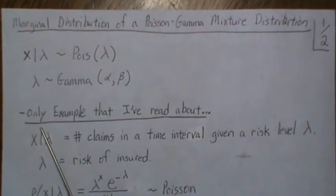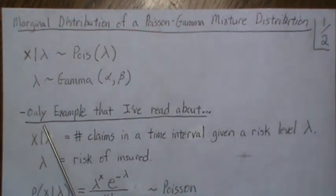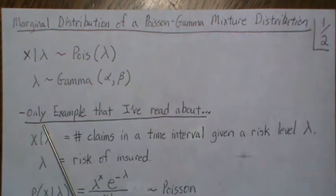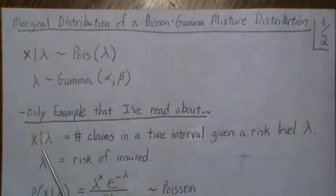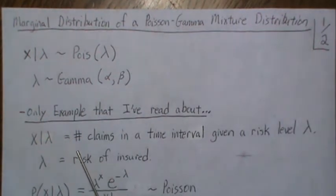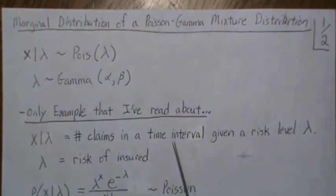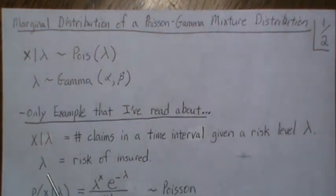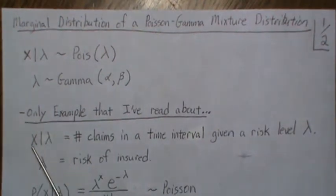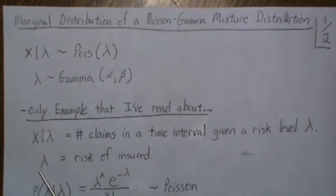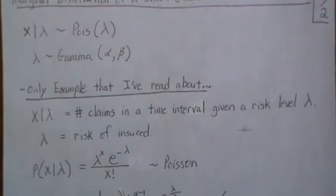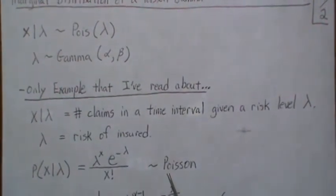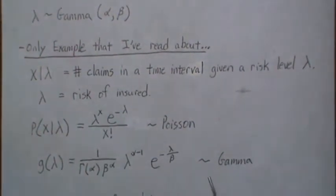Now the only example that I've read about using this model is in the actuarial world where they say that X given lambda is the number of claims in a time interval given a risk level, and then lambda is the risk insured. So they model this piece with the Poisson and this piece with the Gamma.